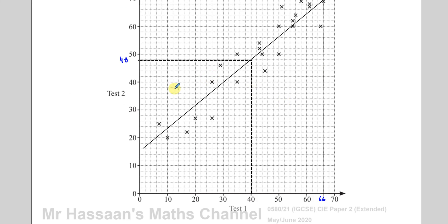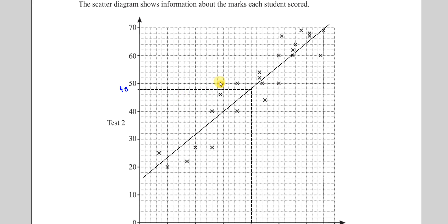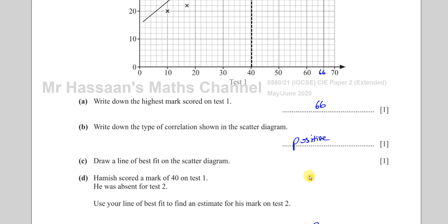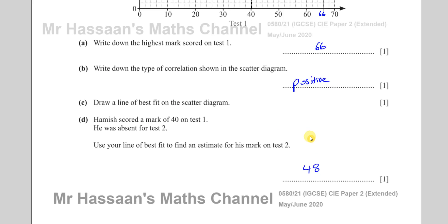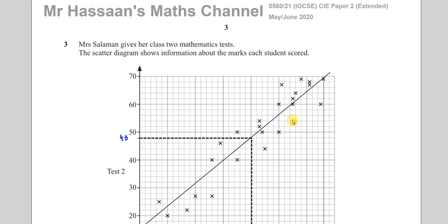Sometimes they even have a follow-through mark for this. Like if you drew your line of best fit completely wrong, for example, you did it something like this, which is quite obviously wrong, and you wrote down 40 for his test two. If they have a follow-through mark where it says, as long as you read it from the line of best fit that you drew, then the examiner might give you the mark for that as well. You might lose the mark for the line of best fit, but you might get the mark for the estimate from the line of best fit that you drew.